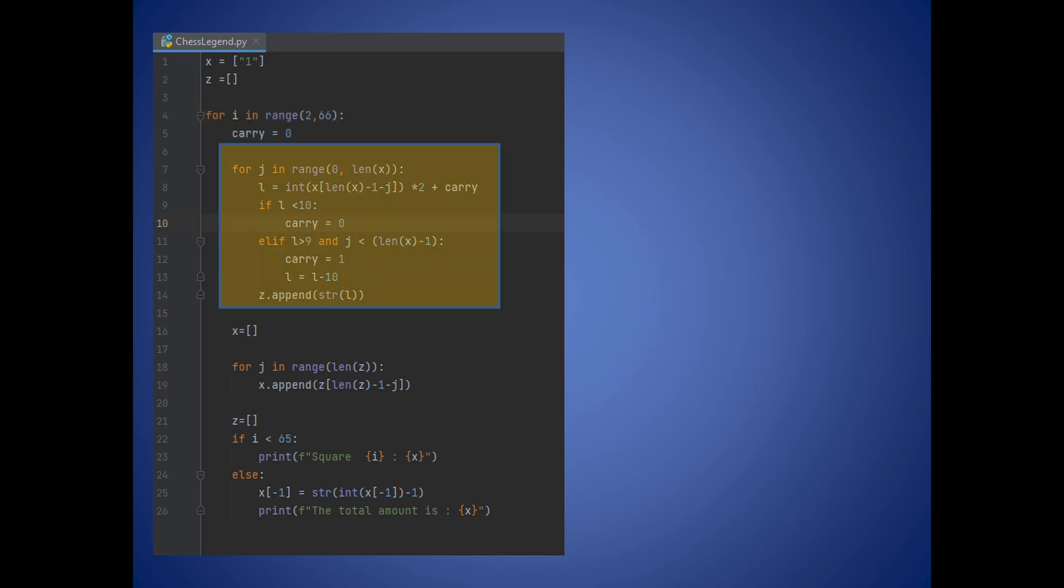Continue with a second loop to access each number separately, noticing that we make the calculations from the last element toward the first of the list. Due to the calculation being only a multiplication by 2 plus adding the carry, the max expected number will be 19. So the carry is limited to 0 or 1.